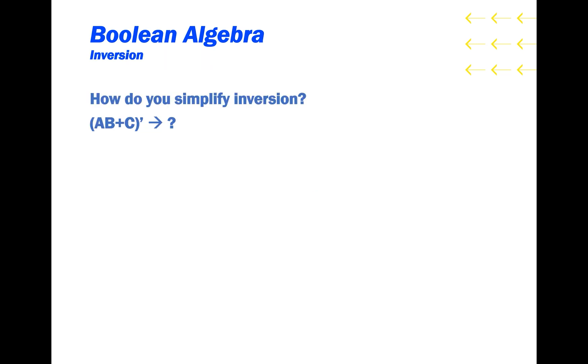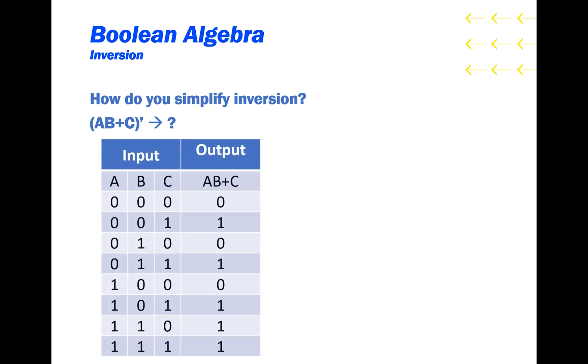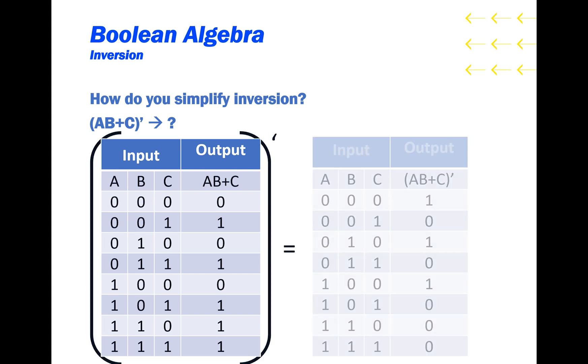Using these rules we can discover the easiest way to simplify inversion. Here I have the truth table for the function we wish to invert. Remember that inversion will simply take the original output and instead output the opposite. So we can find the truth table for the inverse function by swapping all of the bits in the output column.